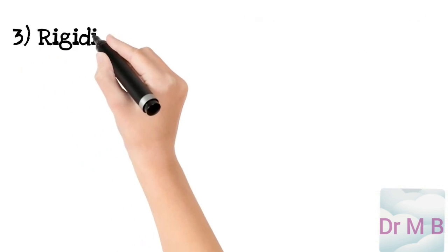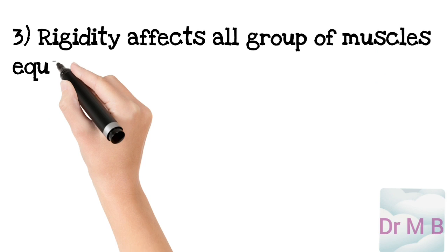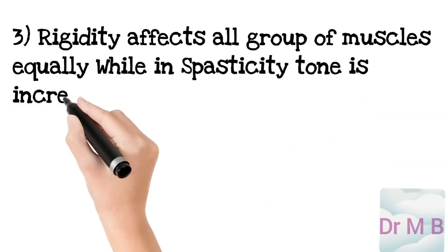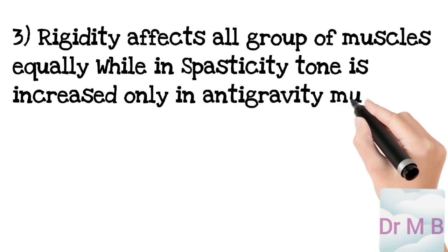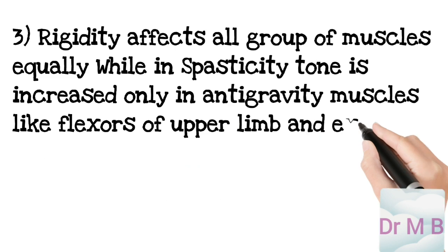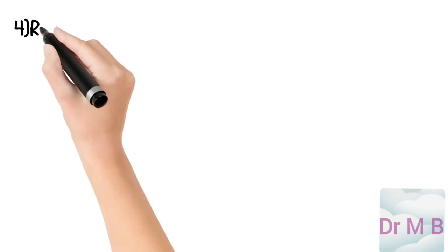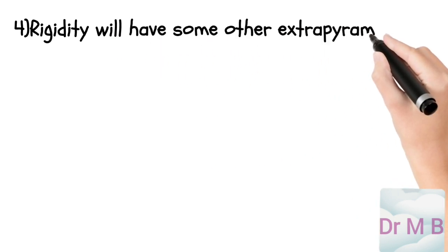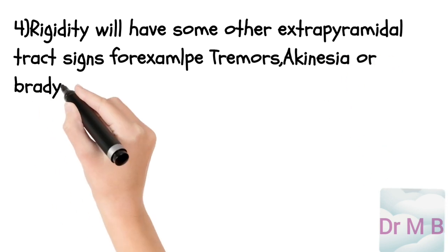Rigidity affects all groups of muscles equally, while in spasticity tone is increased only in anti-gravity muscles, like flexors of upper limbs and extensors of lower limbs. Rigidity will have some other extrapyramidal tract signs, for instance tremors, akinesia,